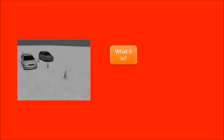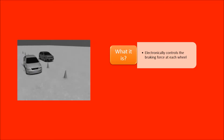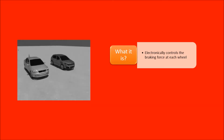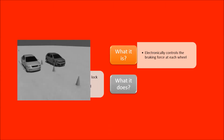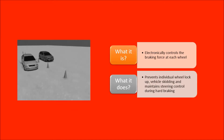Let's first understand the meaning and working of ABS. ABS is a device which electronically controls the brake force at each wheel. Whenever the ECU senses wheel lockup, ABS starts regulating the braking force at each wheel, thus preventing individual wheel lockup, vehicle skidding, and maintaining steering control during hard braking.